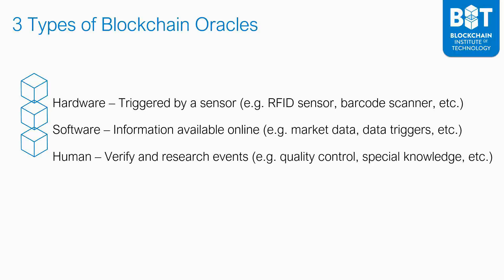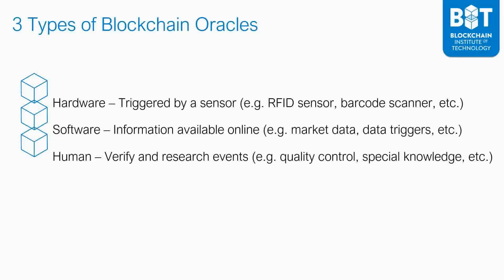There are also human elements who verify and research different events, take care of quality control, and may possess special knowledge. The advantage of a blockchain-based supply chain is that even these human elements gain a bigger level of trust. If an inspector certifies that a specific item passes quality assurance, because that certification can only be provided by somebody with a certain private key, it is certain it was that person — there is no room for fraud or forged signatures.